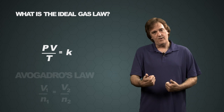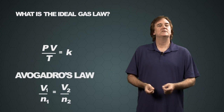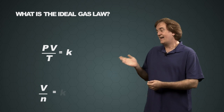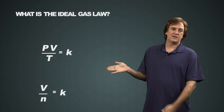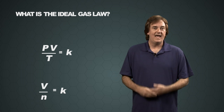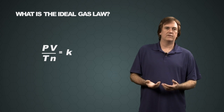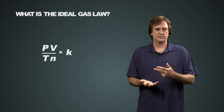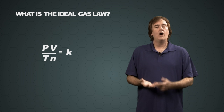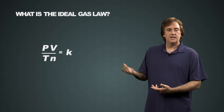We now add in Avogadro's Law, which is simply putting an n for the number of moles in the denominator. And now we've got pressure times volume over temperature times moles — all of that equals a constant.